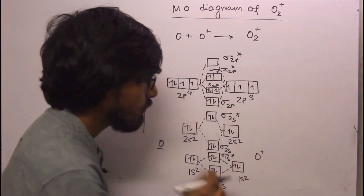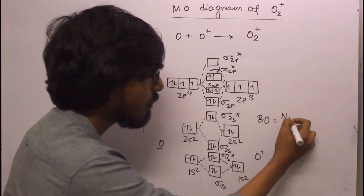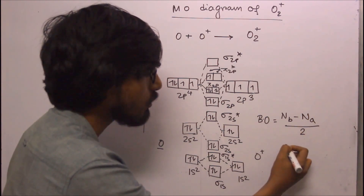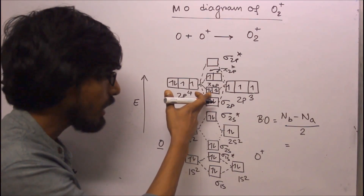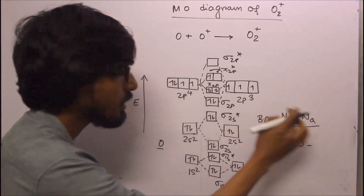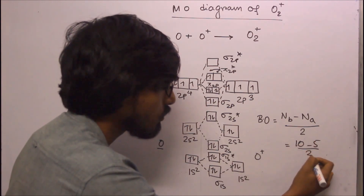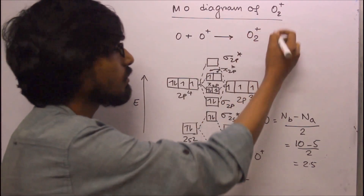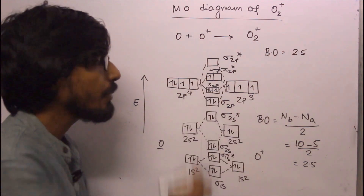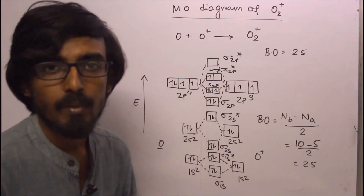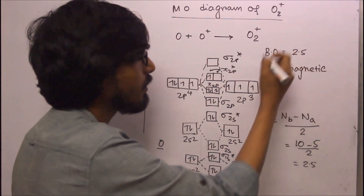Bond order = (bonding electrons − antibonding electrons) ÷ 2 = (10 − 5) ÷ 2 = 2.5. The bond order of O2+ is 2.5. Since one unpaired electron is present in the π*2p orbital, O2+ is paramagnetic in nature.